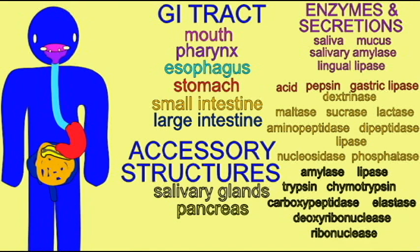Among the accessory structures, the pancreas produces a large number of enzymes, including amylase for starch, lipase for lipids, trypsin, chymotrypsin, carboxypeptidase, and elastase for proteins, and deoxyribonuclease and ribonuclease for the breakdown of nucleic acids.